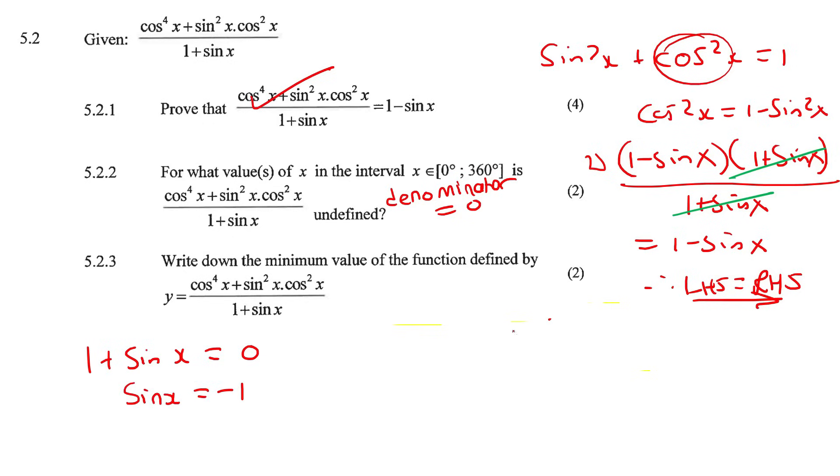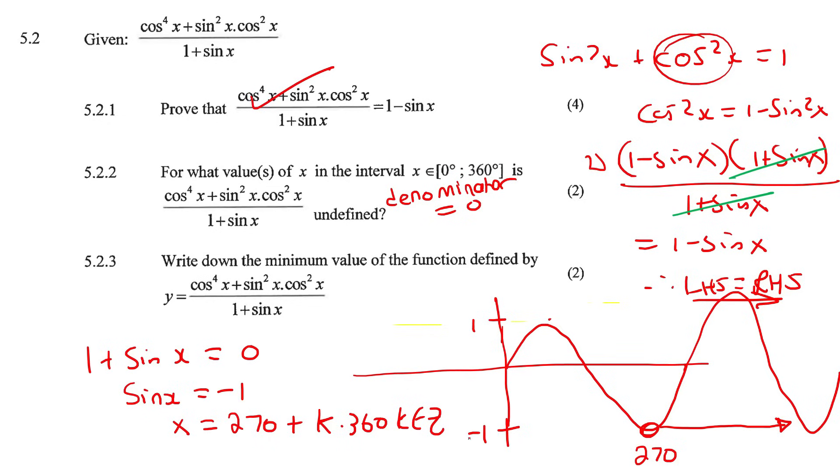You can solve this using the whole quadrant reference angle, but whenever it's a 0, 1, minus 1, I like to actually just use the graph. That's a normal sin graph, and where is a normal sin graph equal to minus 1? It starts at 270 degrees. And if I had to keep going it would repeat every 360. But I just realized they actually gave us an interval, so they just want it as 270, because they gave us an interval.